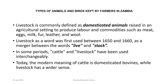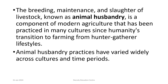The word livestock was first used between 1650 and 1660, as a merger between the words 'live' and 'stock.' In some periods, cattle and livestock have been used interchangeably. Today, the modern meaning of cattle is domesticated bovines, while livestock has a wider sense. The breeding, maintenance, and slaughter of livestock, known as animal husbandry, is a component of modern agriculture practiced in many cultures since humanity's transition to farming from hunter-gatherer lifestyles.